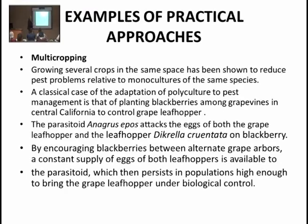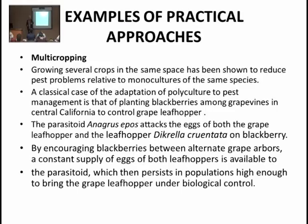البارازيتويد أنجاروس (Anagrus epos) يهاجم بيض نوعي ليف هوبر على البلاك بري. وجد الباحثون أن وجود البلاك بري يعمل كحاضنة للعدو الحيوي البارازيتويد، وبما أن بيض ليف هوبرز موجود على البلاك بري، فإن البارازيتويد يتطفل عليه، مما يمنع فقس بيض جديد وانتقال النطاطات للعنب.